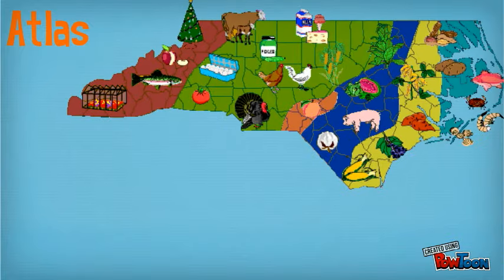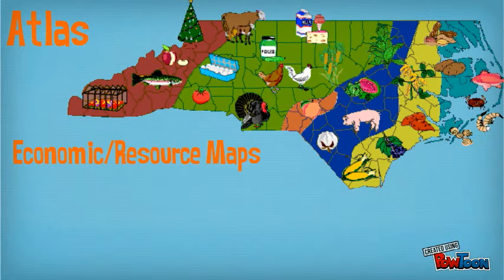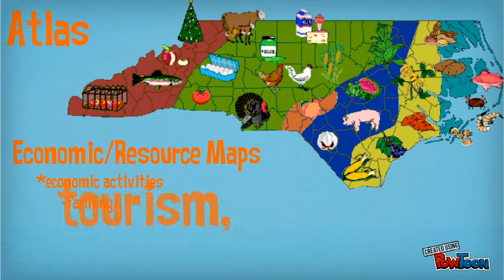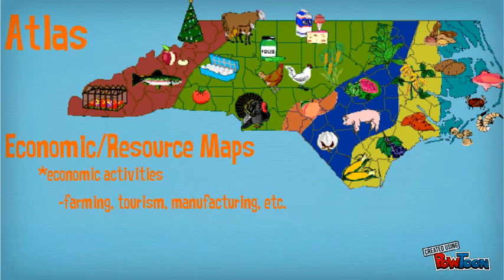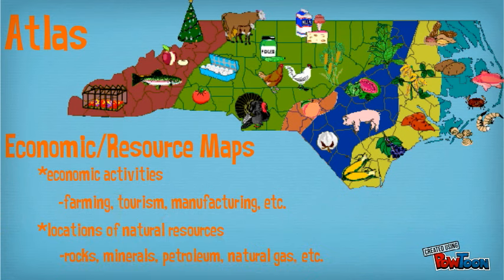The last type of map we will look at is an economic or resource map. This type of map shows you the main economic activities that occur in an area. This could be ways that people make money such as farming, tourism, or manufacturing, just to name a few. This type of map also shows you the main natural resources that can be found in an area, such as rocks and minerals, petroleum, or what we know as oil, or natural gas.